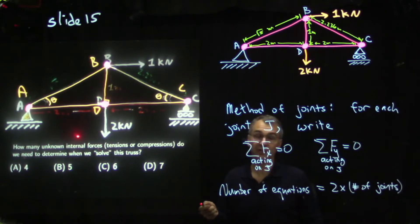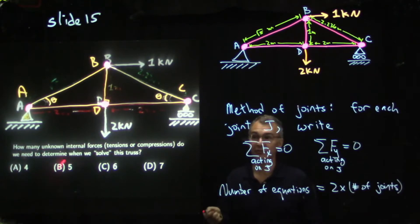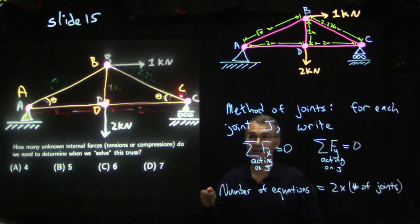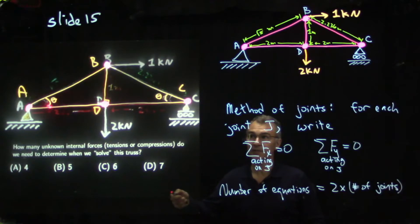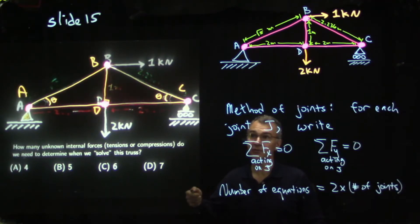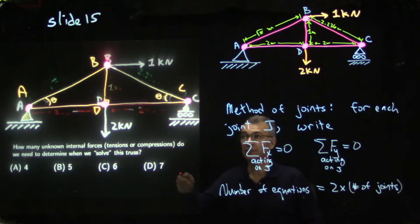How many unknown internal forces — that is, internal tensions or compressions — do we need to determine when we solve this truss? Solving a truss usually involves determining the size and sign — whether it's tension or compression — of every bar force. For every bar in the truss, you need to determine how big the tension or compression is and whether it is tension or compression. These are all internal forces within the truss.